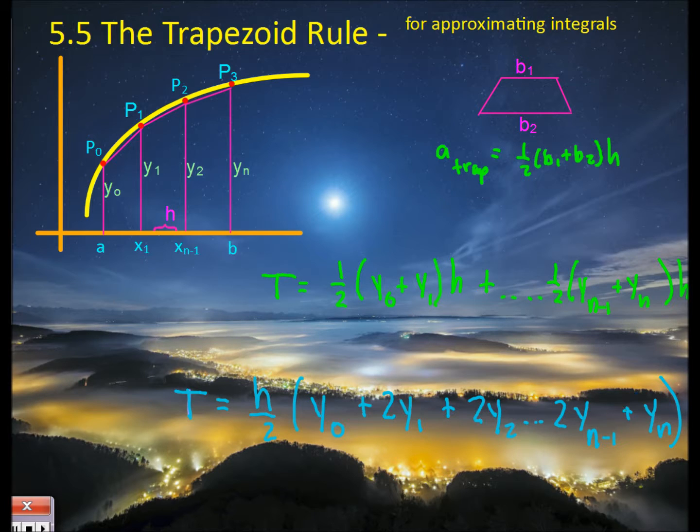All of the values in the middle, the y1 and y2 and so forth, will get used twice because they overlap. So if it's twice y1, twice y2, twice the next to last yn. That is your formula to use for approximating integrals.